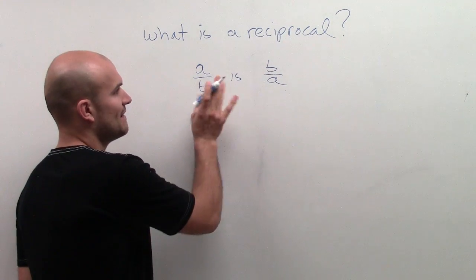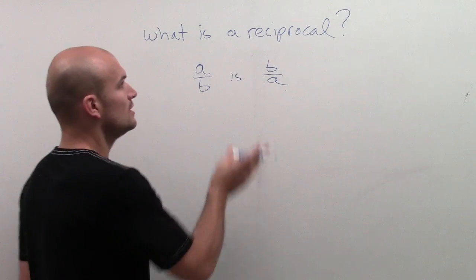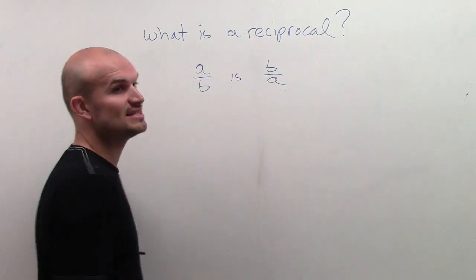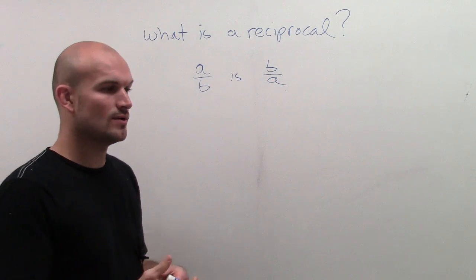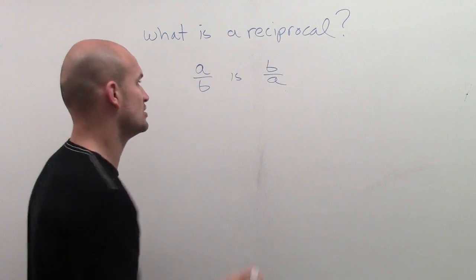The multiplicative inverse means that if I multiply two numbers, I'm going to get 1. So when you multiply a number times its reciprocal, you should always get 1. So your multiplicative inverse is going to be your reciprocal.